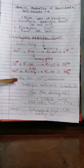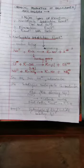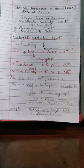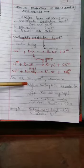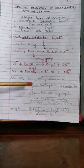Under nucleophilic substitution reactions, we have SN1, SN2, SNi, and SNAr. SN1 is substitution nucleophilic unimolecular. SN2 is substitution nucleophilic bimolecular. SNi is intramolecular, and SNAr is aromatic — those are in higher study only. SNAr is used only when we are doing aromatic examples.